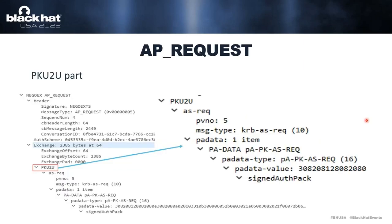The second part is authentication. The first message sent from client to server is the AP Request — not a Kerberos AP Request but a NegoX AP Request, a new message type. This message contains exchange data with a PKU2U part. In the first AP Request, the PKU2U part will contain a Kerberos PKInit AS Request — specifically a Kerberos-PKInit AS request using the Azure AD P2P certificate.